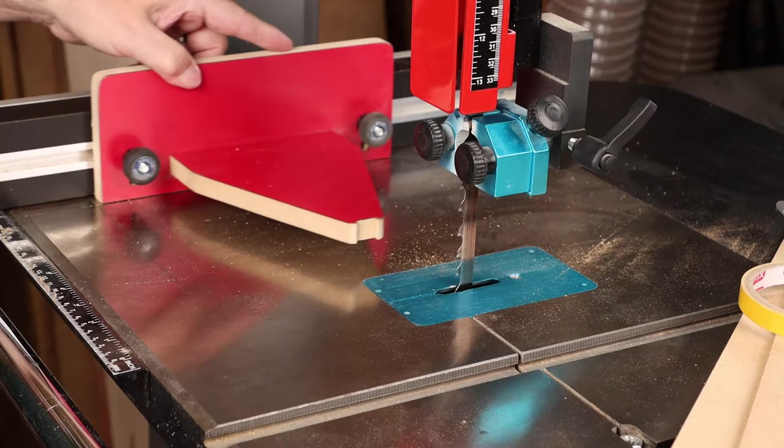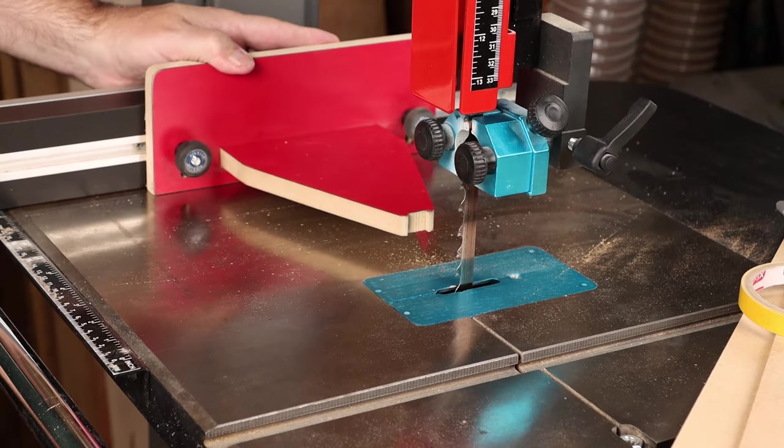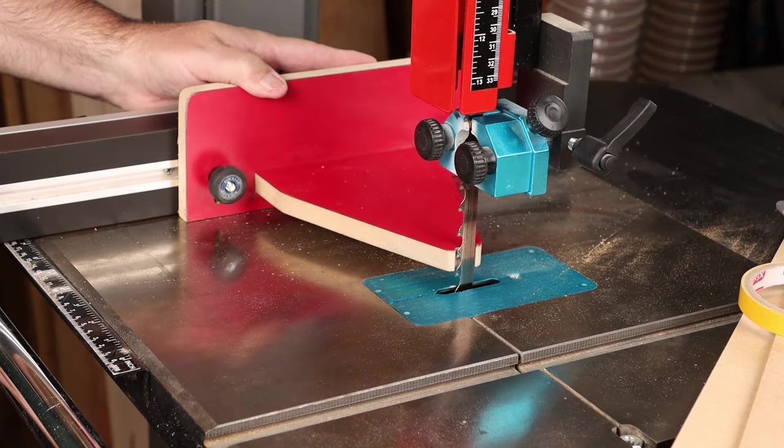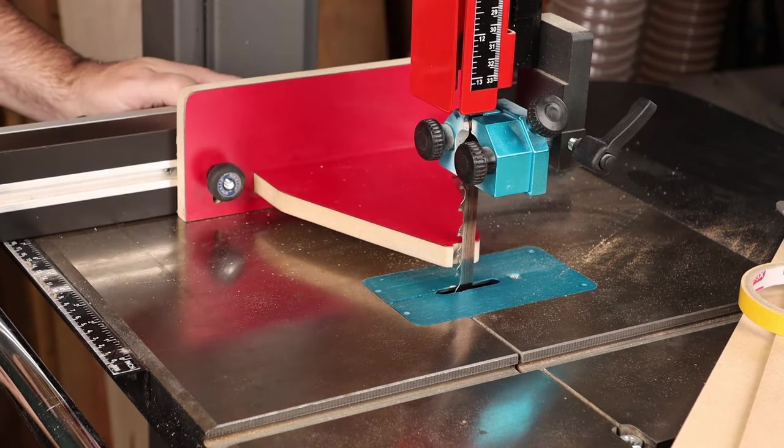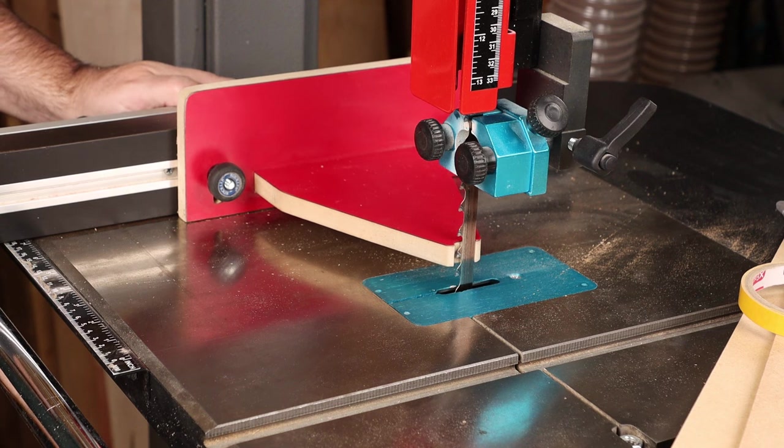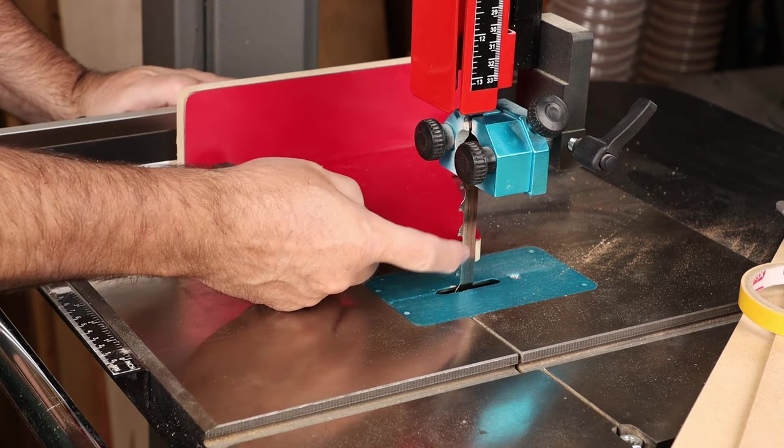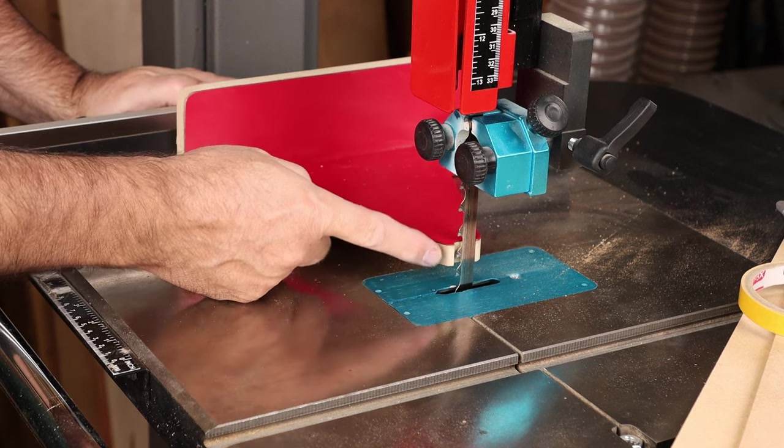And this mounts on the same custom fence with that T-track slot, and you just use a combination of that adjustability, fore and aft, and then the fence adjustability, left and right, to set how much of a difference you want between your workpiece and the template.